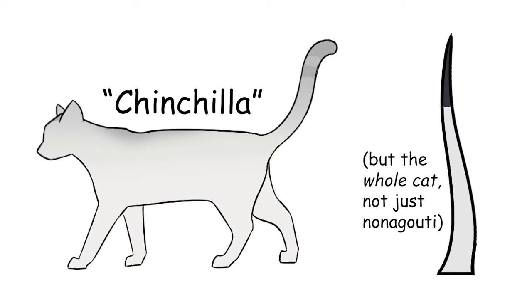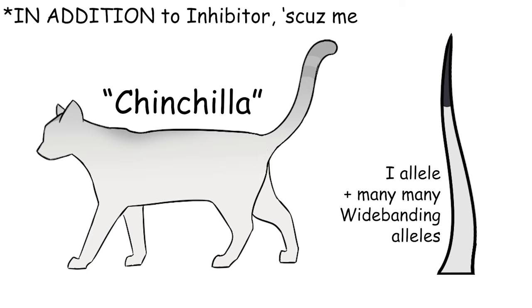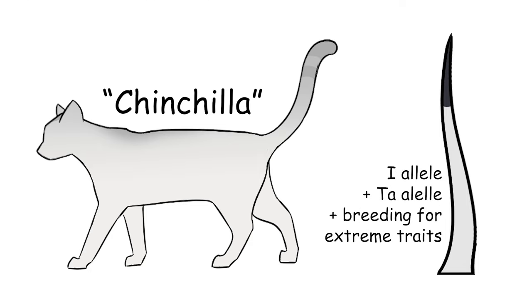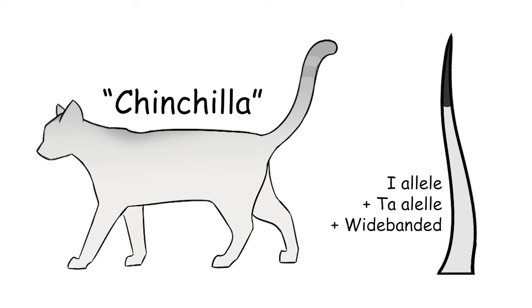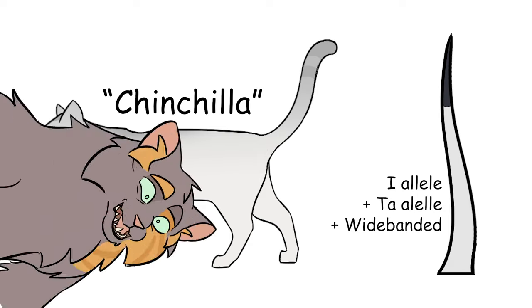A chinchilla cat looks like this. Their hairs are depigmented, except for colored tips. This is either the result of extreme widebanding, or it's a silver ticked tabby who has been selectively bred to be paler. Or maybe the selective breeding that makes a silver ticked tabby into a chinchilla is widebanding. Who knows?